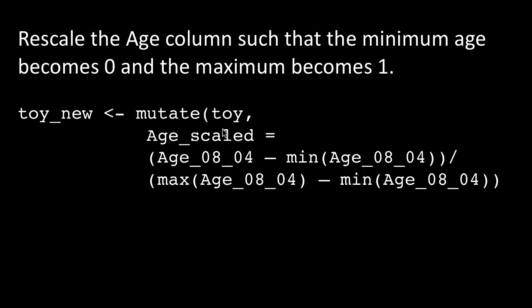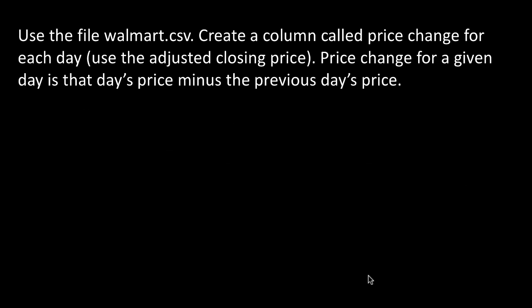It's not as if we are going to manually do this — we'll be using some functions — but it's interesting to know this concept. Now we revisit our Walmart stock price table. Using the file walmart.csv, create a column called price_change for each day using the adjusted closing price. For every day we want to find out the price change from the prior day — that day's price minus the prior day's price, which could be positive or negative.